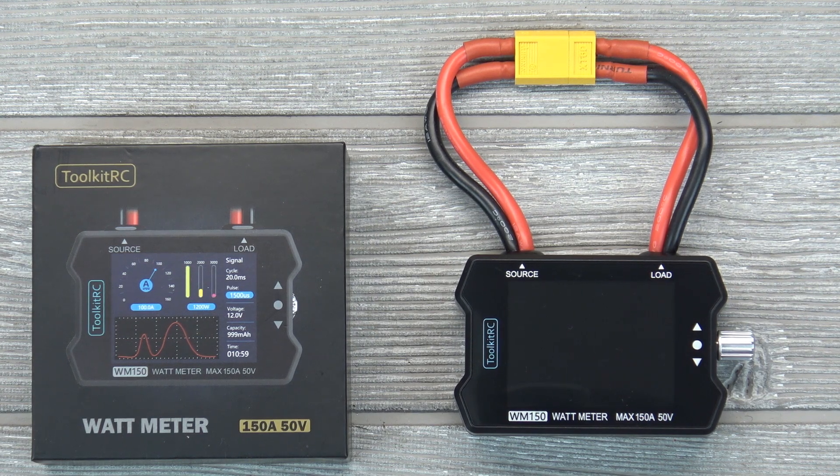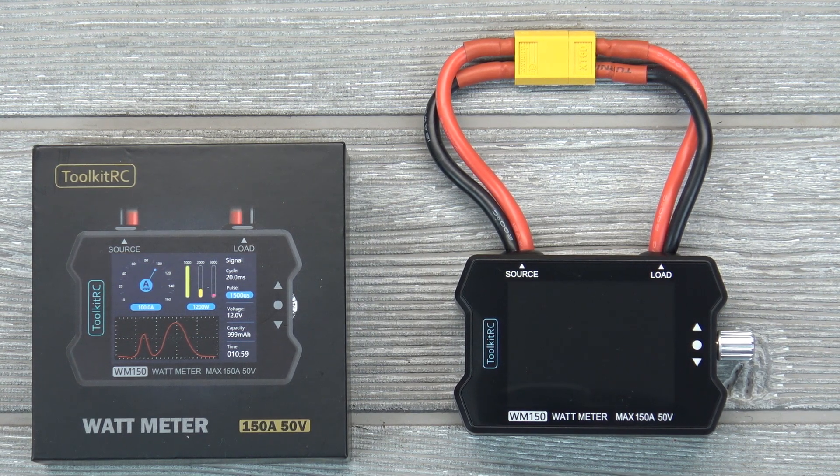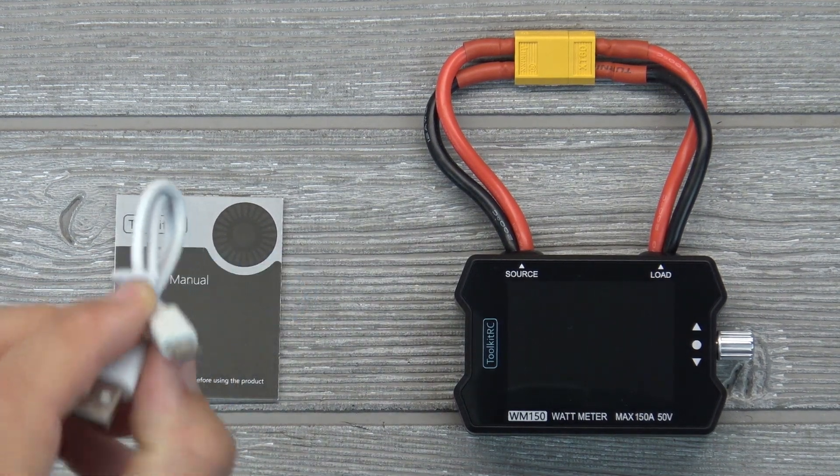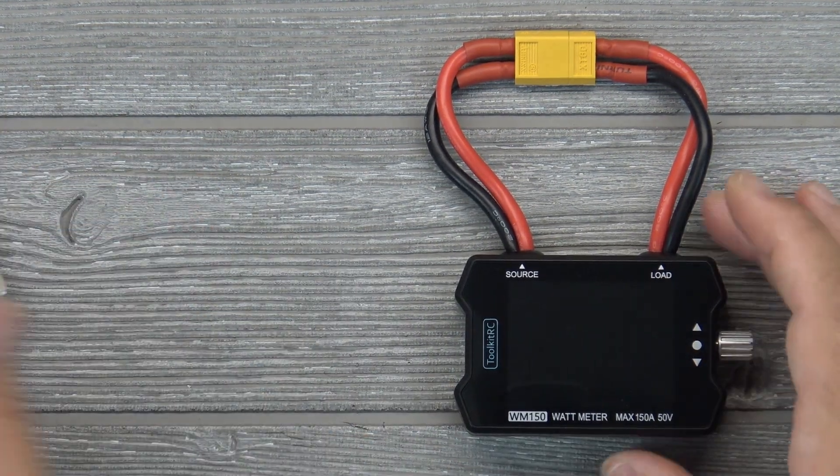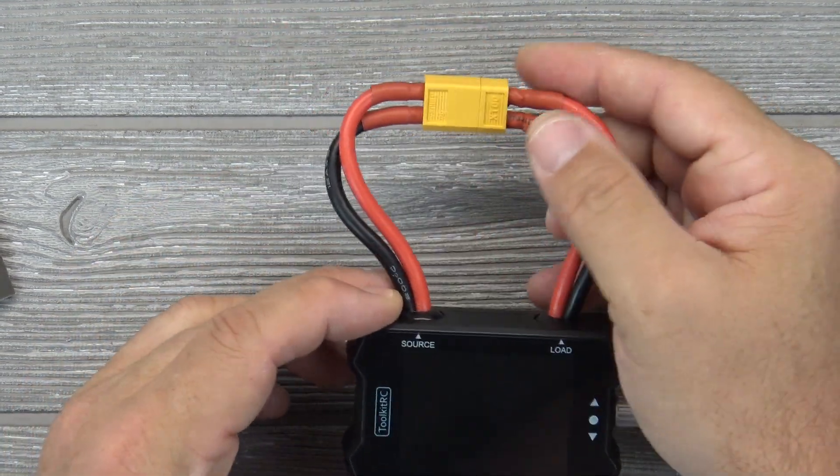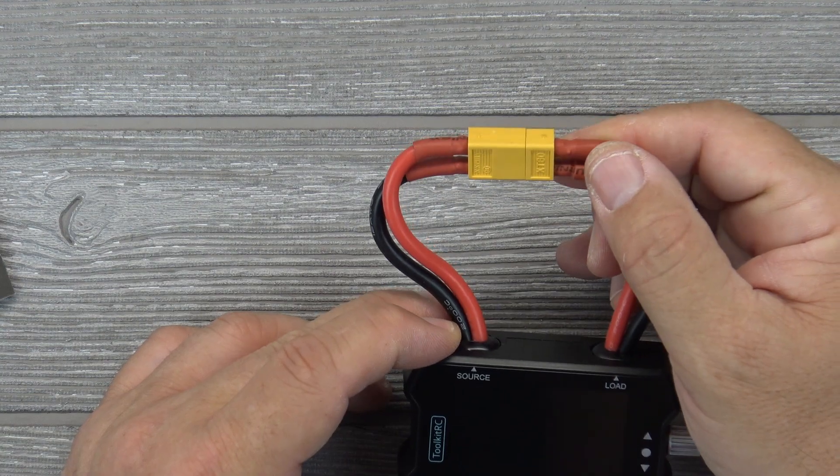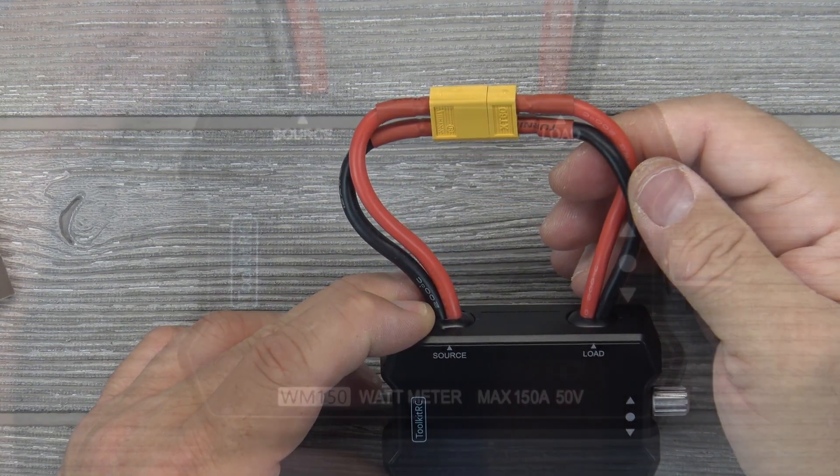Without any further delays, I'm going to show you what comes in the box and then we'll plug it in and test it out. In the box, you get a mini USB cable, a manual, and the Watt Meter itself. Now this Watt Meter does not come with XT60 or any other type of connectors. You have to decide which ones you want to use and solder them on yourself. I've already done that.